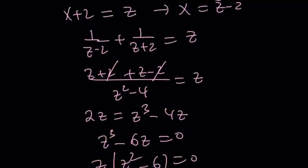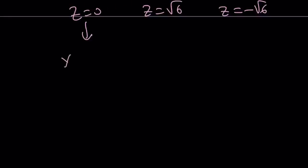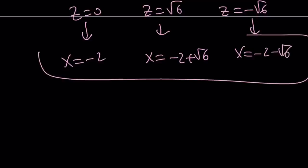But remember, z is x plus 2 or x is z minus 2. So from here, x is going to become negative 2. From here, x is going to become root 6 minus 2, or you can write it as negative 2 plus root 6. And this is going to become x equals negative 2 minus root 6. So those are going to be all the solutions like before.